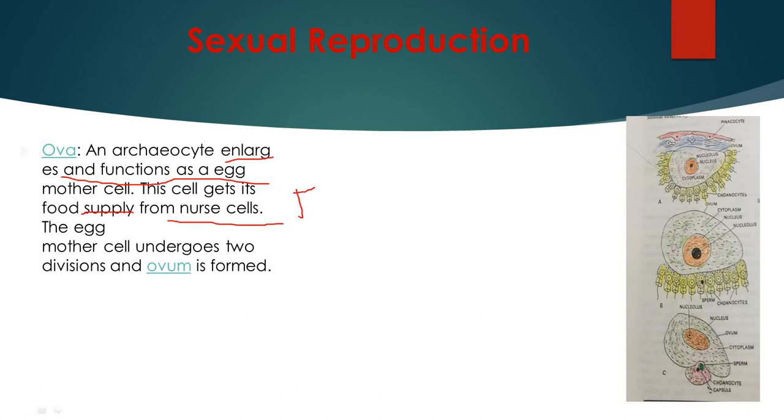On completing growth, each oocyte undergoes changes into ovum by undergoing meiotic division in which polar bodies are excluded.